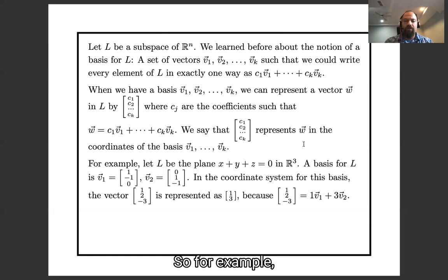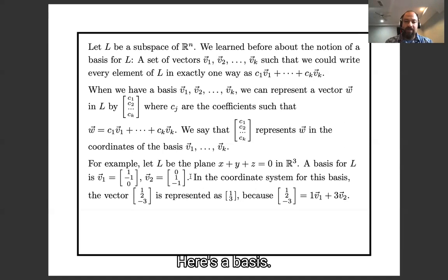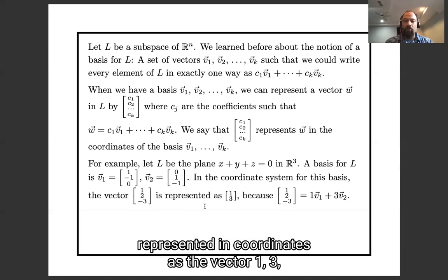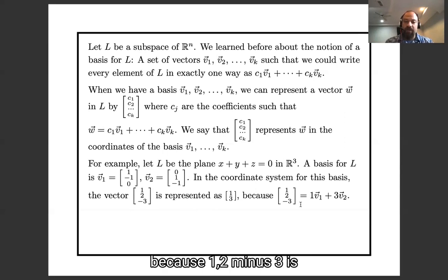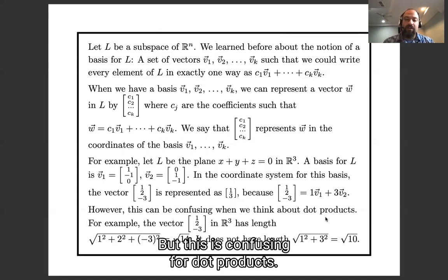So for example, let L be the plane x plus y plus z equals 0 in R³. Here's a basis. The vector <1, -1, 0> is represented in coordinates as the vector <1, 3>, because <1, -1, 0> is 1 times the first basis element plus 3 times the second basis element.